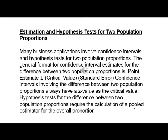Hypothesis tests for the difference between two population proportions require the calculation of a pooled estimator for the overall proportion.